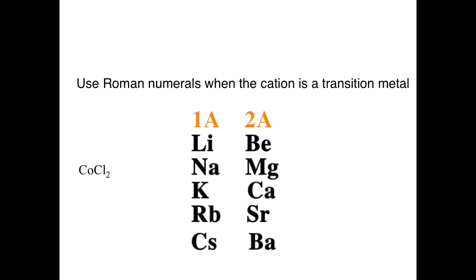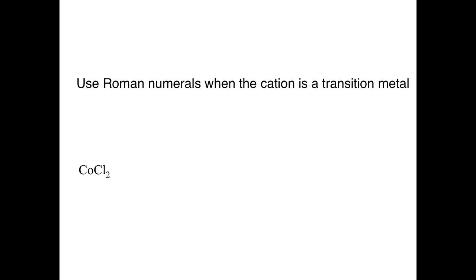If you are in group 1A, you always will be positive 1. If you are in group 2A, you're always going to be positive 2 as cations. But when you are a transition metal, all bets are off. So to combat this, we have to use something called Roman numerals to tell us what is the actual charge of that cation.